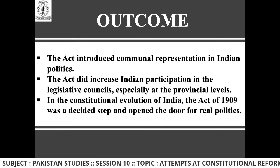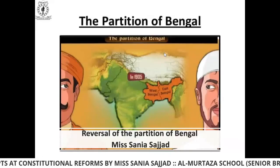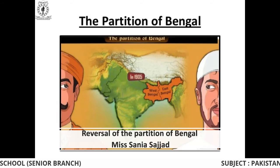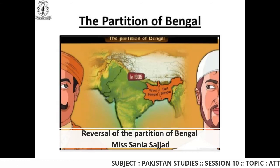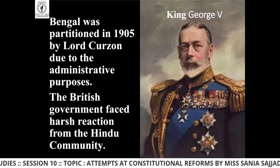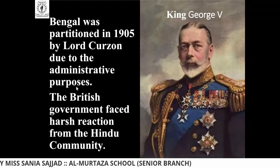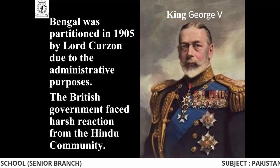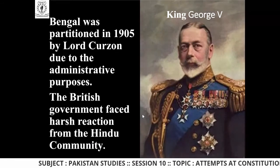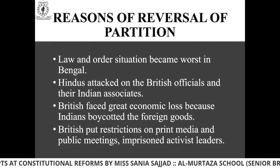Now let's move forward to another reform — the Partition of Bengal. We have already studied about the partition of Bengal, so today we are going to study about the reversal of the partition of Bengal: what happened and what the outcome was. Bengal was partitioned in 1905 by Lord Curzon for administrative purposes. The British government faced a harsh reaction from the Hindu community, who were not in favor of the partition of Bengal.